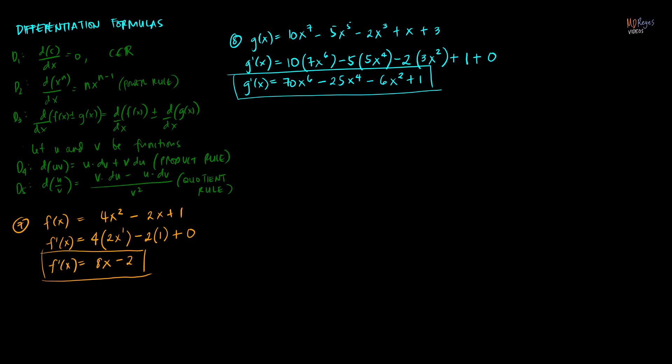Let us apply the product rule in number 9. In number 9, we have a product of x plus 2 and 2x minus 3. Of course, we can always simplify this by removing the grouping symbols using the FOIL method and then differentiate afterwards, or we can differentiate using the product rule.